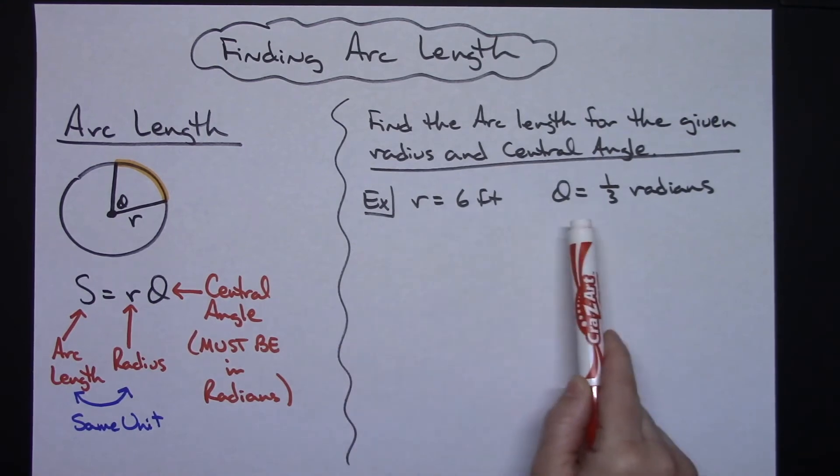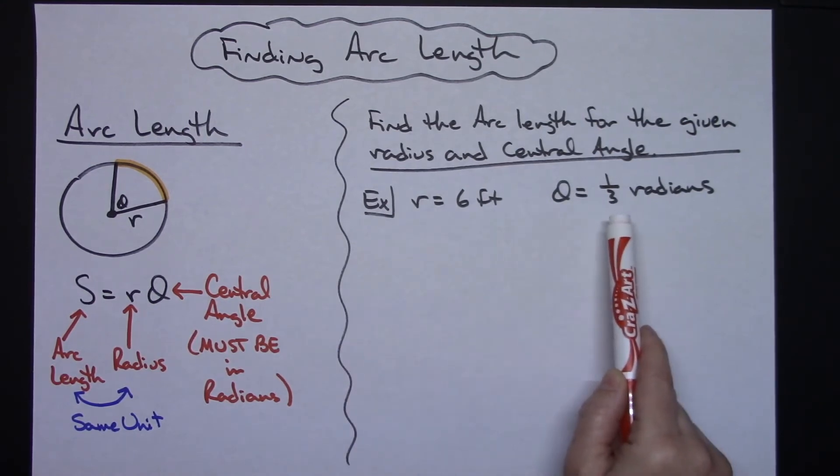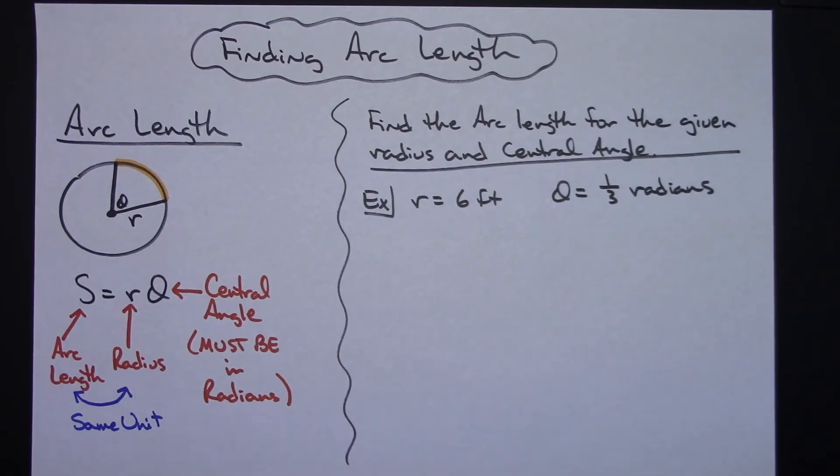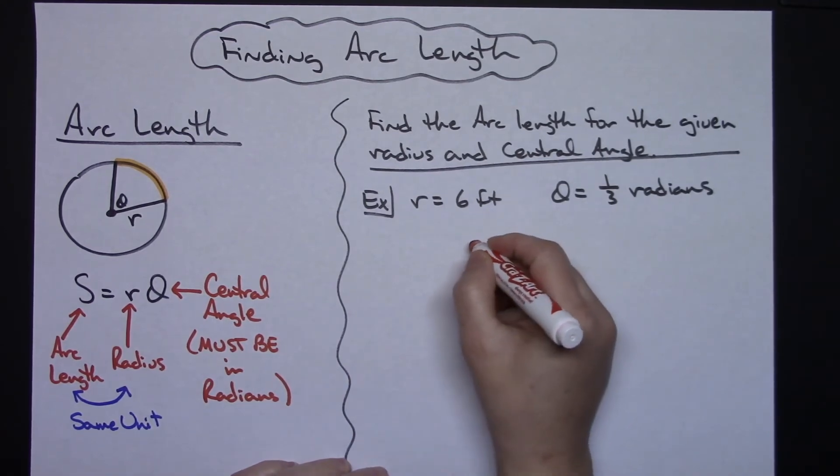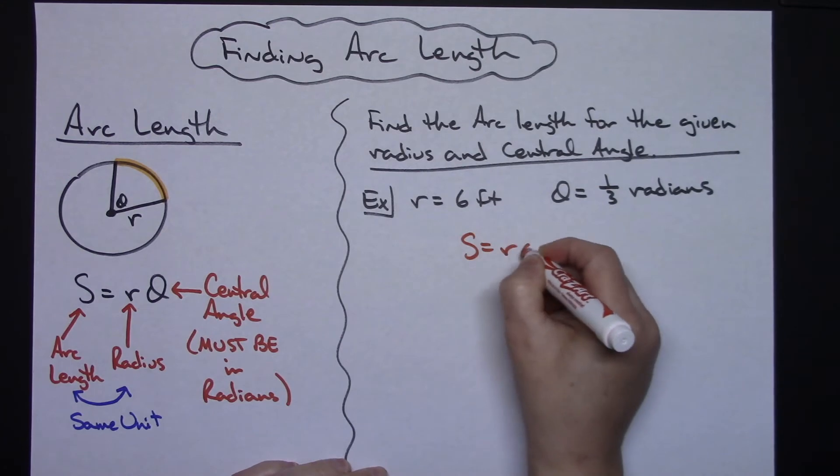I have a radius of six and my central angle is one-third radians, which is exactly what I need it to be in. So if we do just a direct substitution and plug into our formula.